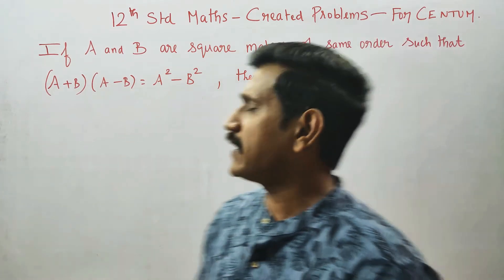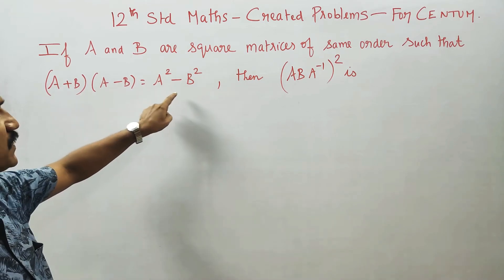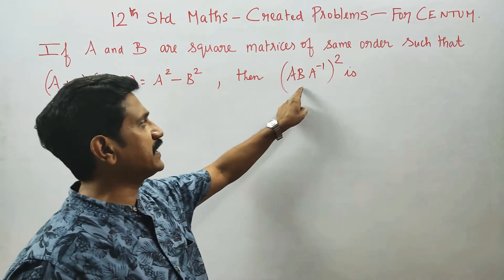If A and B are square matrices of same order, such that A plus B into A minus B is equal to A square minus B square, then you have to find the value of this.